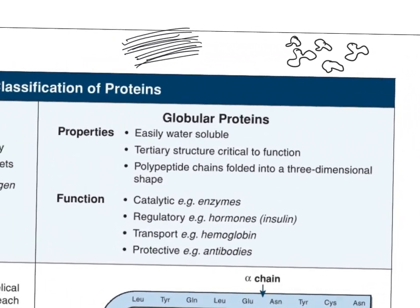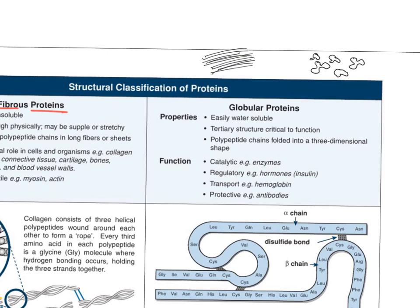Globular proteins are different from fibrous proteins because they don't form fibers — they're kind of amorphous but do have a shape, just not stringy. These molecules dissolve in water. They're in cells and in blood. So it's really good that they're soluble in water.